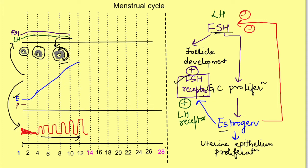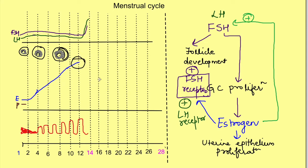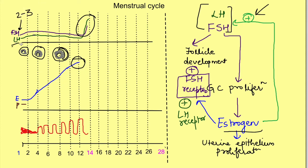By day 12, estrogen reaches a very critical level, and at this point the effect of estrogen on LH and FSH changes — instead of negative feedback it becomes positive feedback. So after a certain concentration of estrogen is reached, it causes a positive feedback effect on LH and FSH, leading to a rise in their levels. FSH rises around 2 to 3 fold while LH rises around 6 to 10 fold, starting 24 to 48 hours before ovulation and peaking around 16 hours before ovulation.